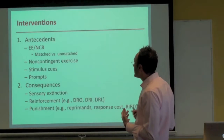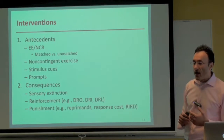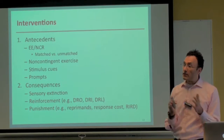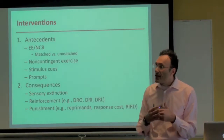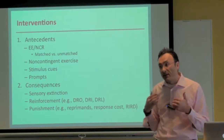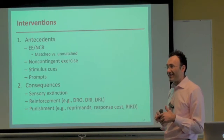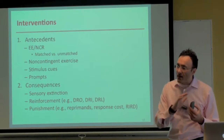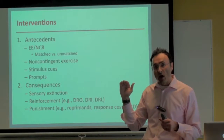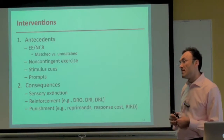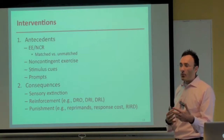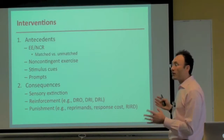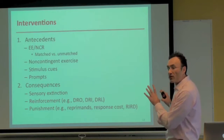Beginning in 1983, Reed did a study looking at non-contingent exercise — having a person who emits stereotypy do aerobic exercise for 15–20 minutes. In the 90 minutes following, people engaged in less stereotypy — it had an abolishing operation effect. But it's short-lived: by the end of 90 minutes, the person was emitting stereotypy similar to the baseline mean. Unless we require aerobic exercise every 20 minutes, this might not be a good strategy. The thrust of antecedent research today is with environmental enrichment.